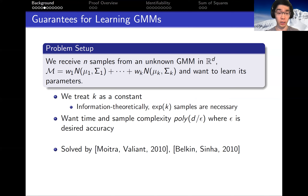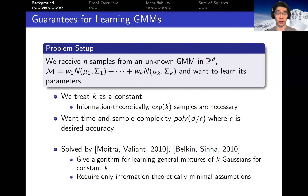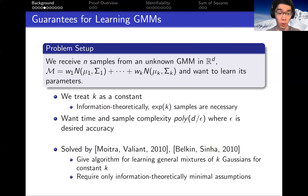This problem of learning GMMs was solved in concurrent works by Moitra and Valiant in 2010, and also by Belkin and Sinha that same year. They gave an algorithm for learning a general mixture of k Gaussians for a constant k, working under information-theoretically minimal assumptions. We need to assume the mixing weights are all not too small, since if some weight w1 were too small you'd never get samples from that component. We also need to assume no two components are exactly the same, because then we could never distinguish w1 and w2. Those two assumptions suffice for learning the parameters of the mixture.